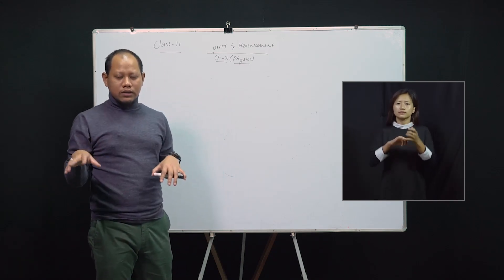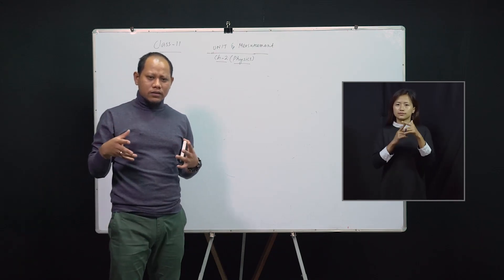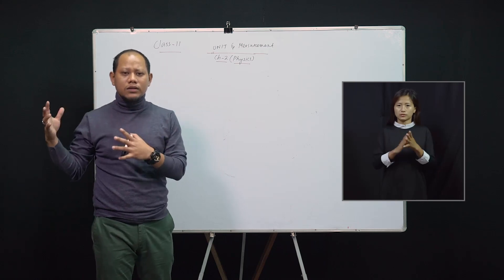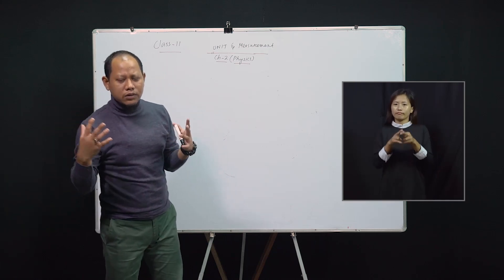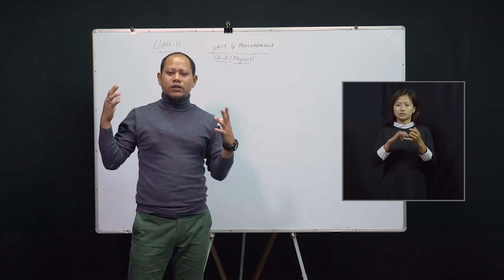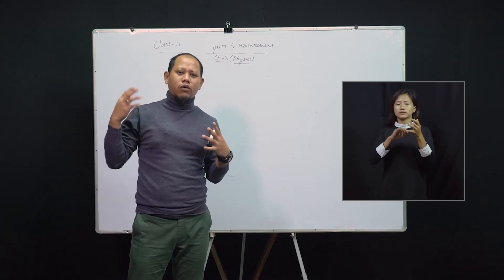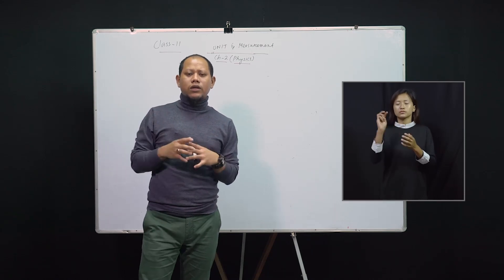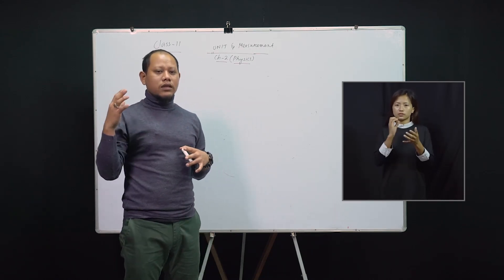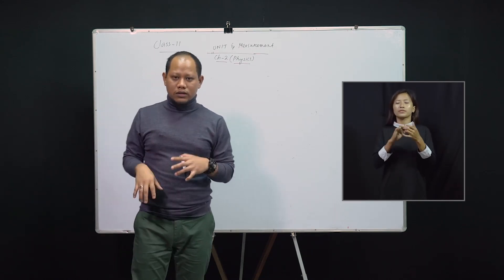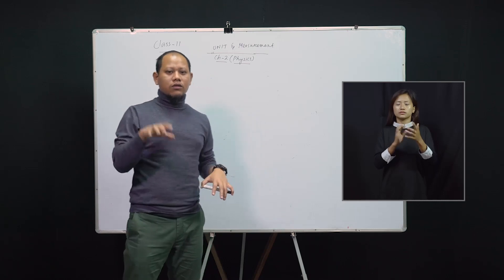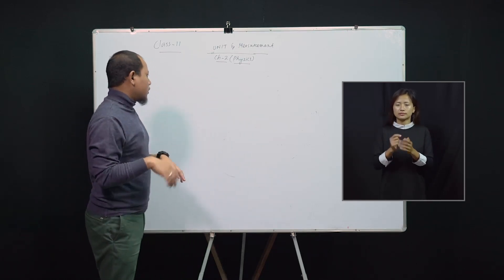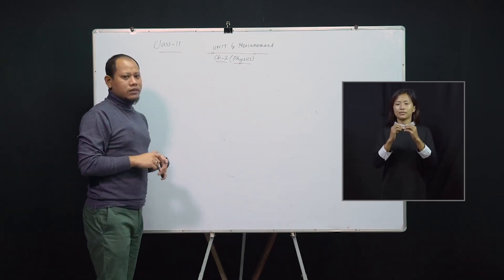Now, what is a system of units? There is a difference between a unit and a system of units. A system of units means a combination of two, three, or more units. This combination of units is called the system of units.